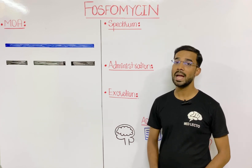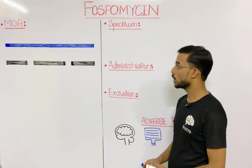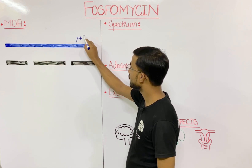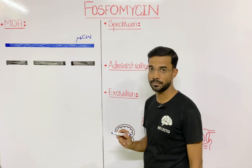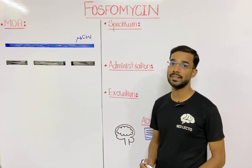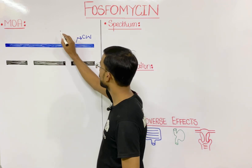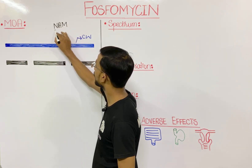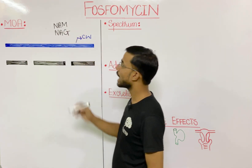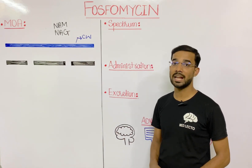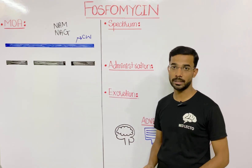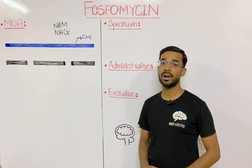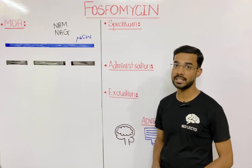Peptidoglycan is the most important component of the bacterial cell wall. The cell wall of bacteria has two components: NAM and NAG — N-acetyl muramic acid and N-acetyl glucosamine — which form the glycan chain. In between them you will see the presence of peptide bonds, which is why we call it peptidoglycan.